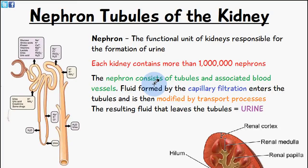Welcome to Five Minute School. Today's video will be talking about the nephron tubules of the kidney. We've already discussed in previous videos the structure and function of the kidneys and renal blood supply. The function of the kidney is filtration of blood and formation of urine, and these processes occur in the nephron — the functional unit of the kidneys, responsible for the formation of urine.